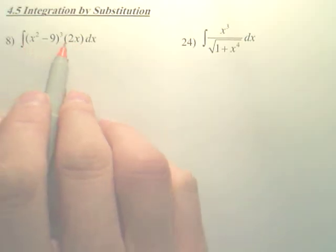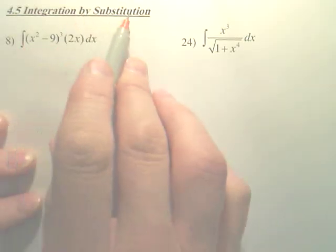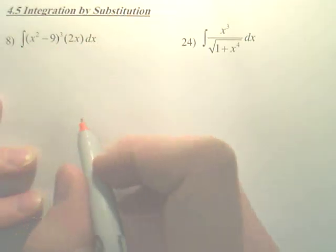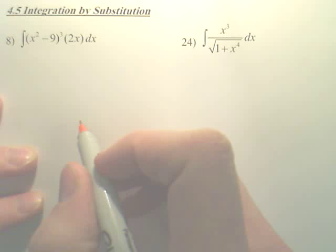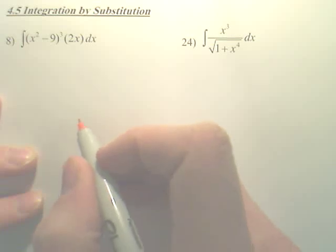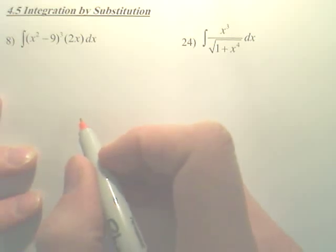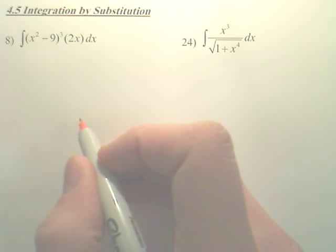Alright guys, we're going to integrate this using u-substitution. What you first got to do is find the inner piece. The inner piece is what we call u, and what happens is you find something — an inner piece — that when you derive it, you get another piece there.